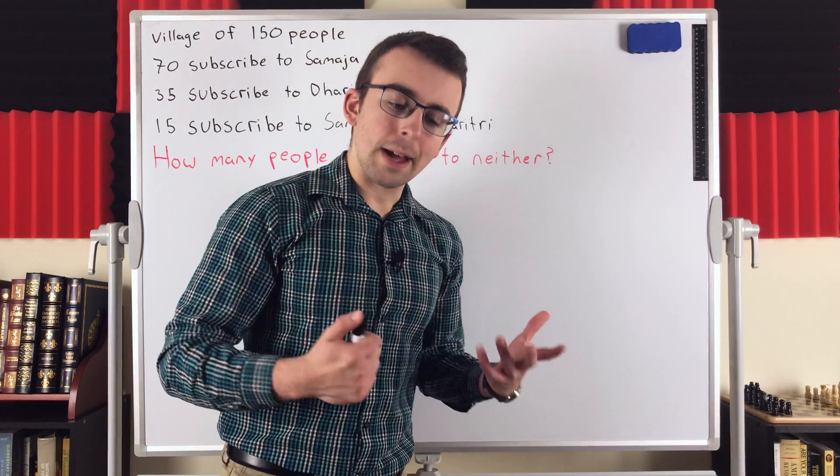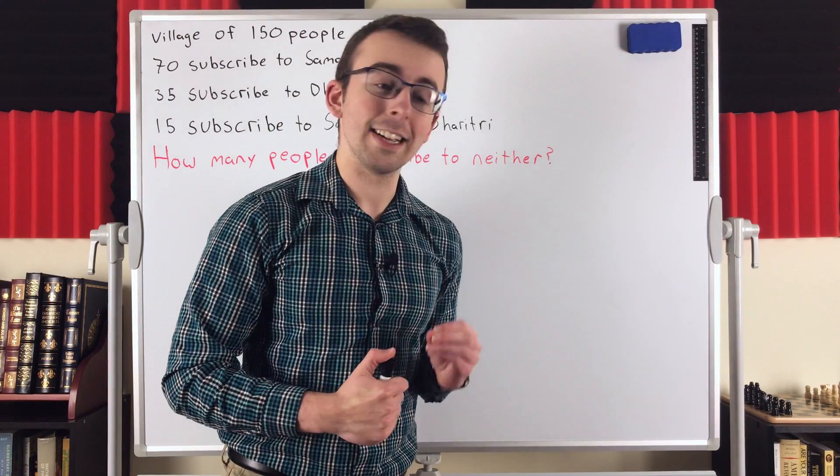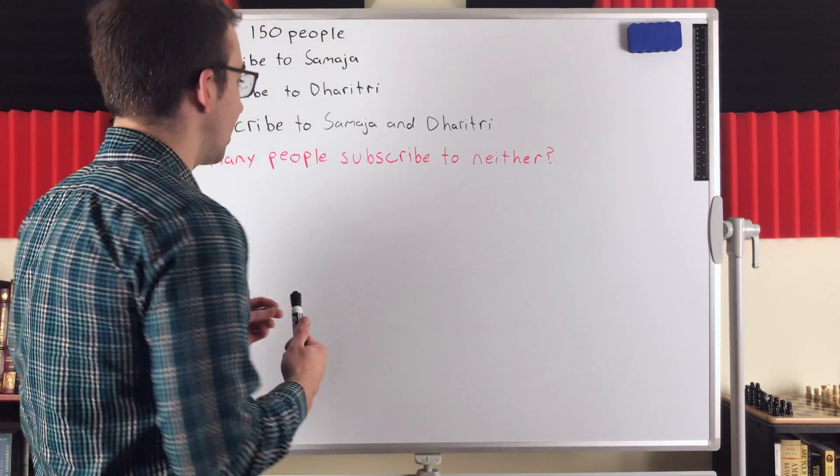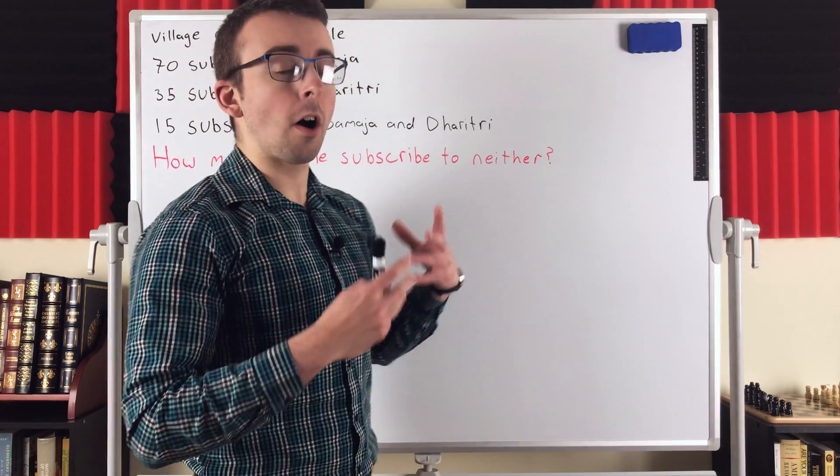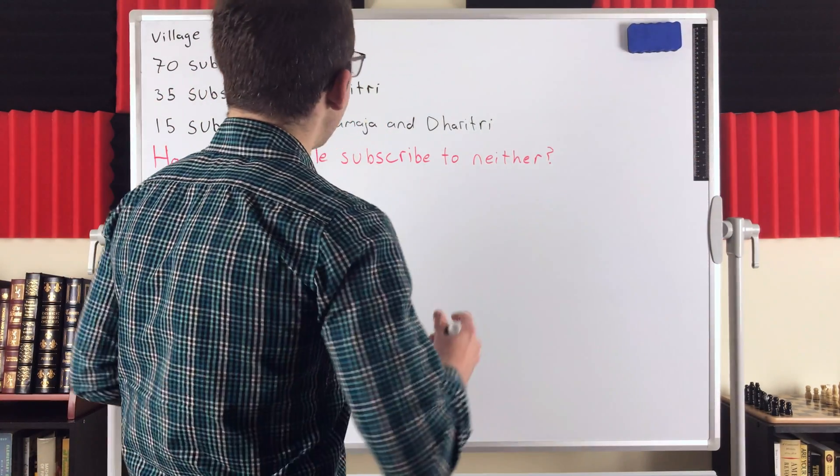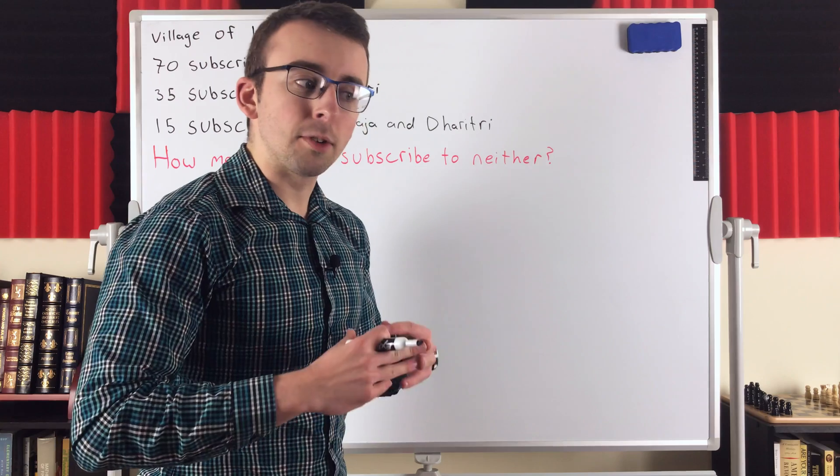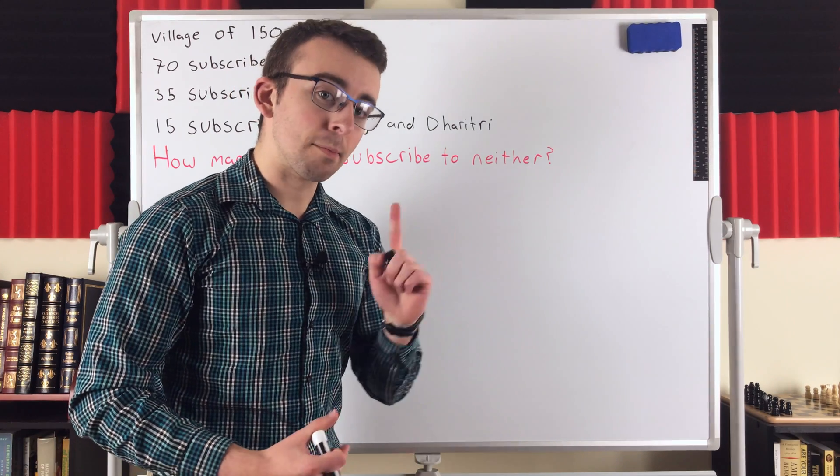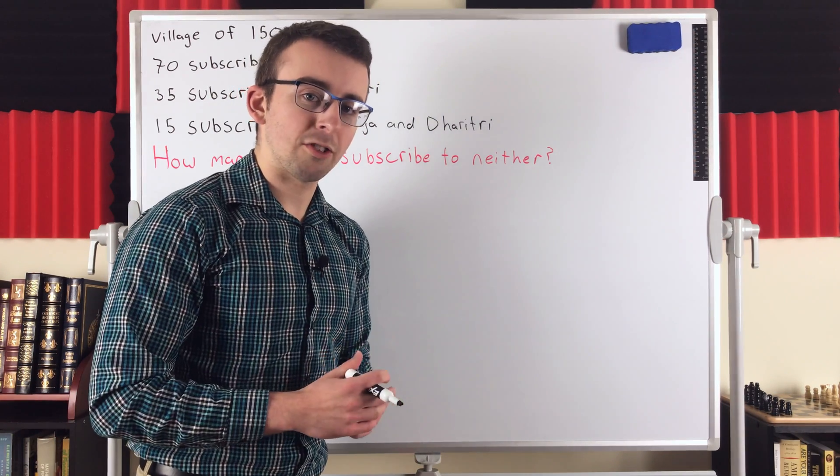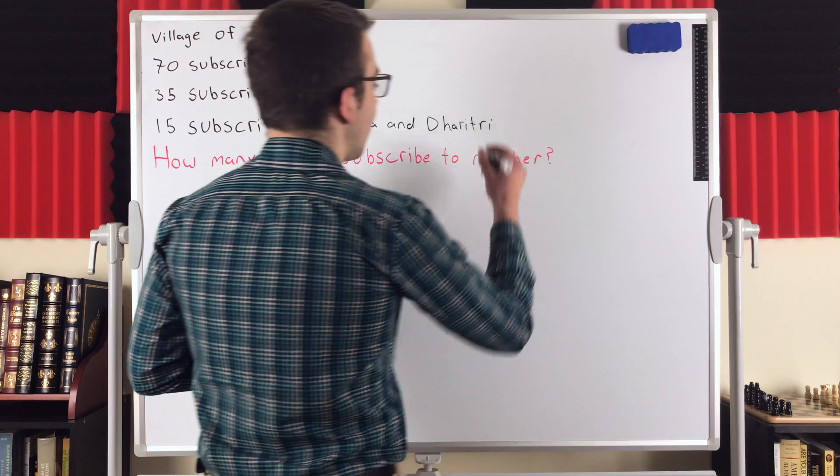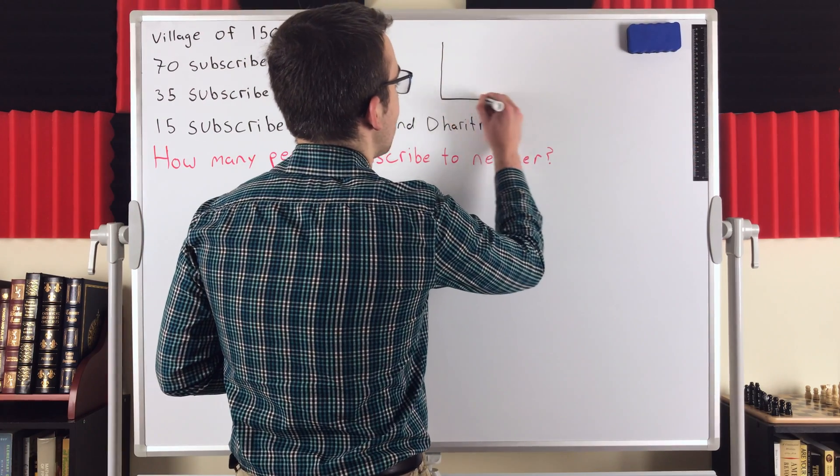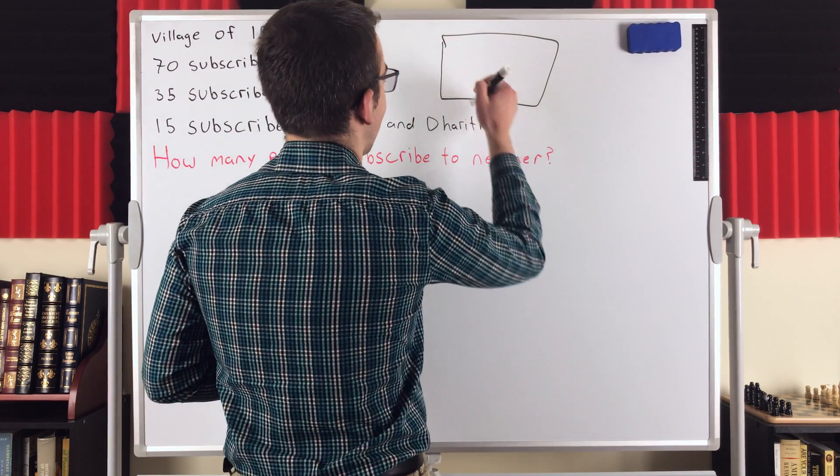Now, the first method that might occur to you, and indeed it's a good one, is you might think if we can figure out how many people are subscribed to a paper, then everybody else in the village is subscribed to no paper, and that number of people is the answer to our question. That reasoning is correct. If we were to represent that in a very simple diagram, you might say this